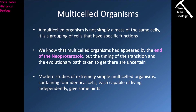Let's get looking at multi-celled organisms. The Proterozoic is important because it's the first time that we begin to see multi-celled organisms appearing in the fossil record, and they appear right towards the end of the Proterozoic. A multi-celled organism is not simply a mass of the same cells — that would technically be a colony. It's a grouping of cells that have specific functions. We know that multi-celled organisms had appeared by the end of the Neo-Proterozoic, but the timing of the transition and the evolutionary path taken to get there are uncertain. These are soft-bodied organisms, so they don't fossilize very well, making the fossil record pretty patchy.